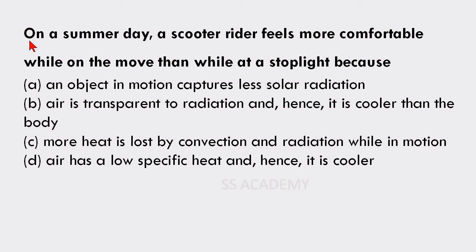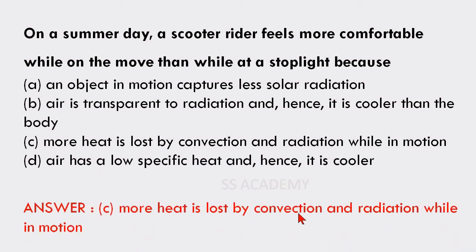Last question: On a summer day, a scooter rider feels more comfortable while in motion than while stopped at a traffic light because — an object in motion captures less solar radiation, air is transparent to radiation, more heat is lost by convection and radiation while in motion, or air has low specific heat? The answer is: more heat is lost by convection and radiation while in motion.